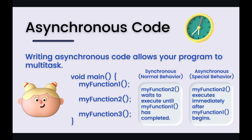But we can actually run code asynchronously. That means before the previous line of code has actually even completed running, we will start the next line of code. So if you take a look at this example, normal synchronous behavior would start executing my function one and then wait until it completes before starting my function two, and so on. Basically, my function two is prevented from running until my function one has completed.